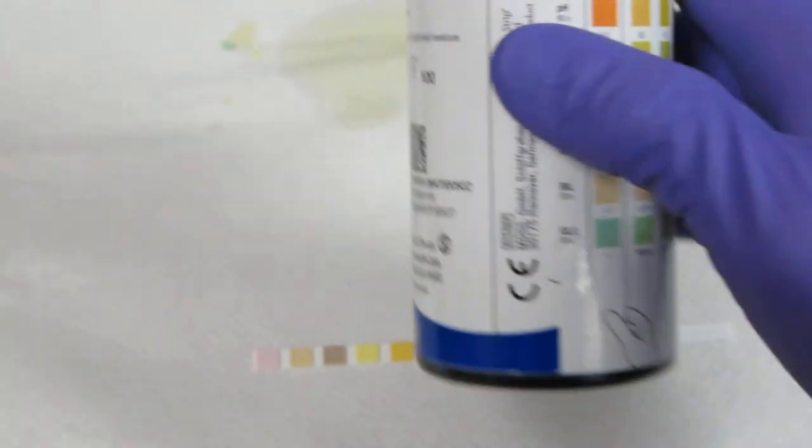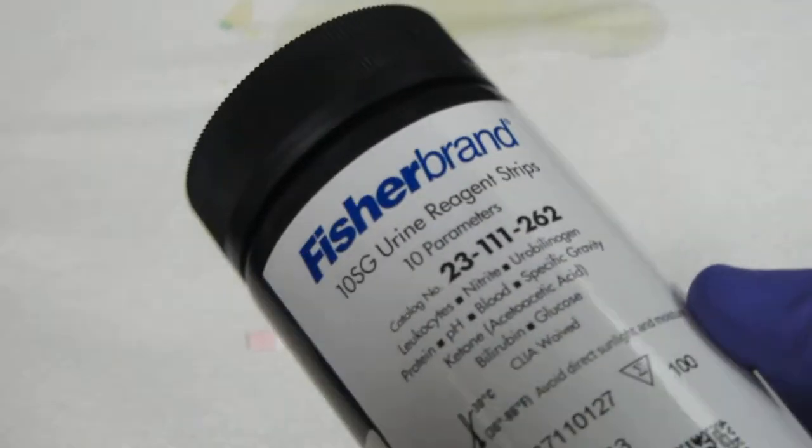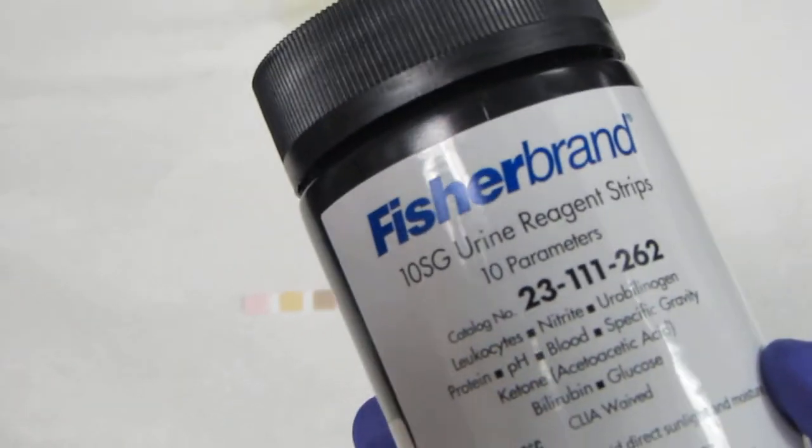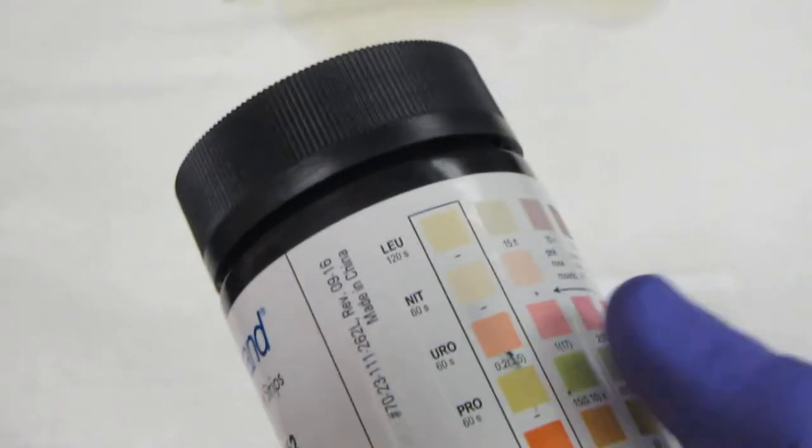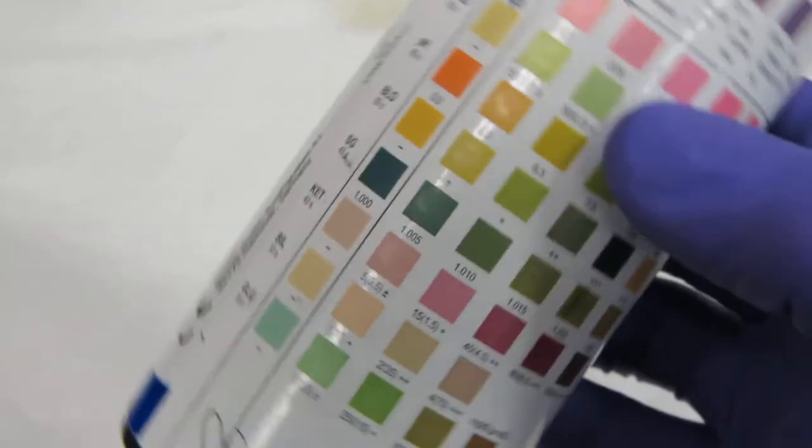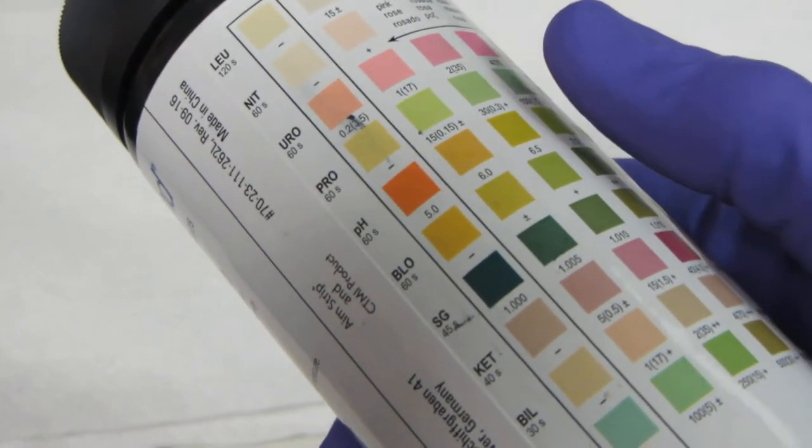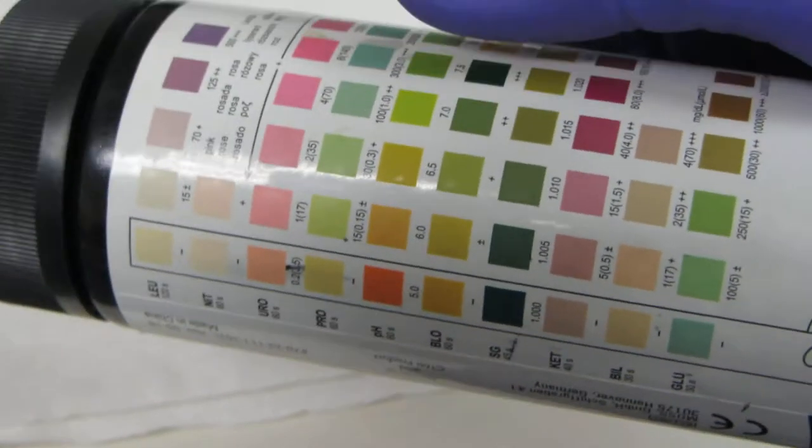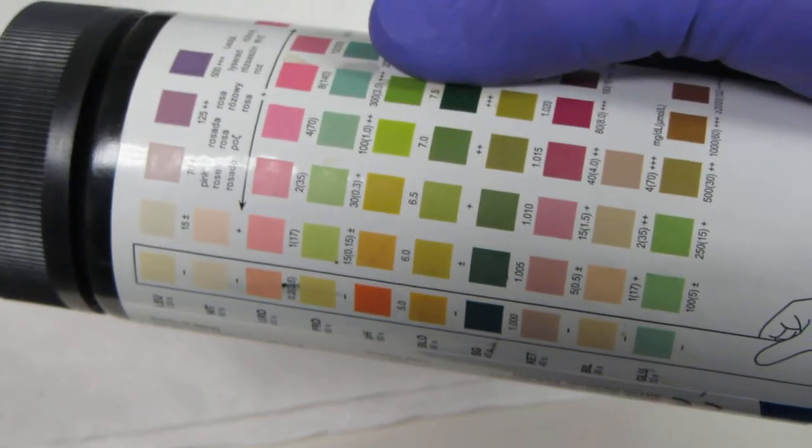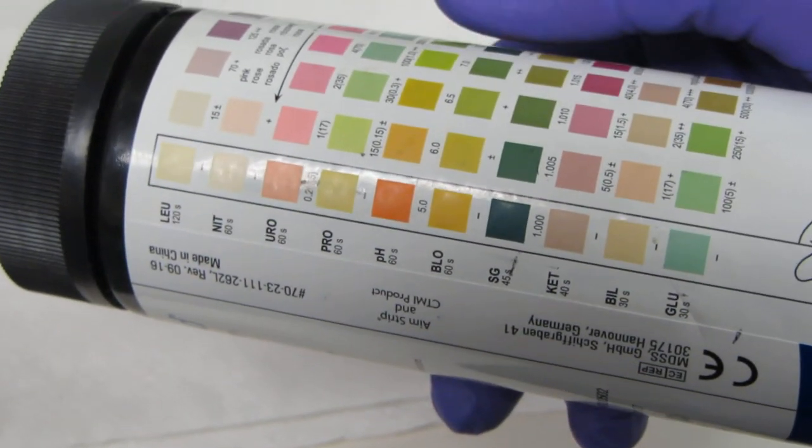So what we're going to need is something called a urine multi-stick, and Fischer brand is one of the more common ones used. And if you take a look at the back of the bottle, you'll notice that the paper you hopefully have seen or have a copy of is actually a representation of what you would find on the back of this bottle.